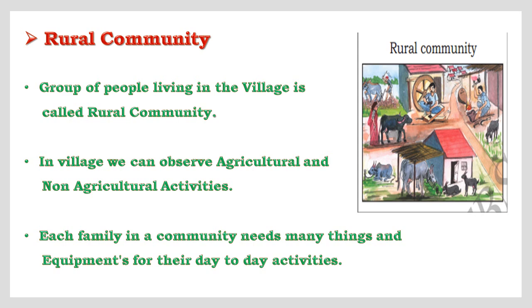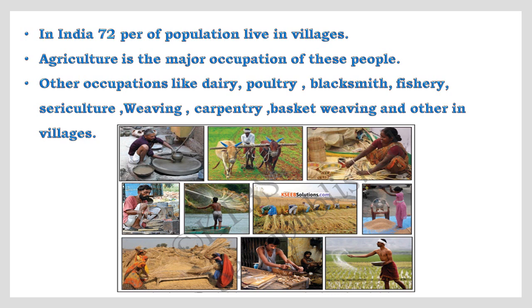Here is a picture of a rural community. In this picture we can observe many activities like a farmer working in the land, a poultry, and a woman making baskets — people working in the field and many other rural activities. That means both agricultural activities and non-agricultural activities can be observed in a village. Each family in a community needs many things and equipment for their day-to-day activities.